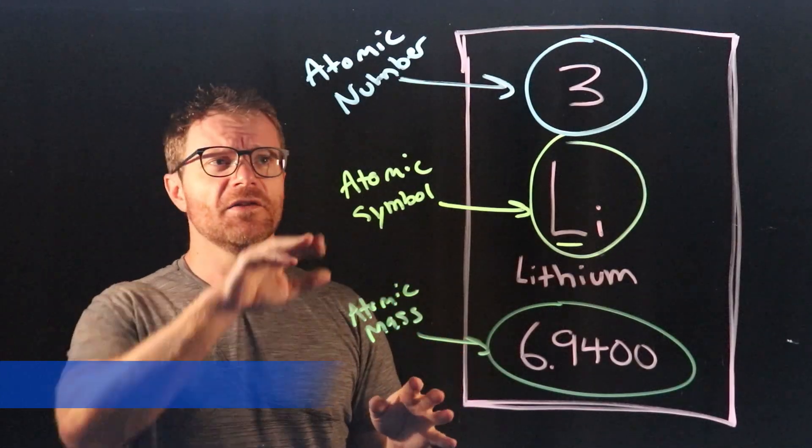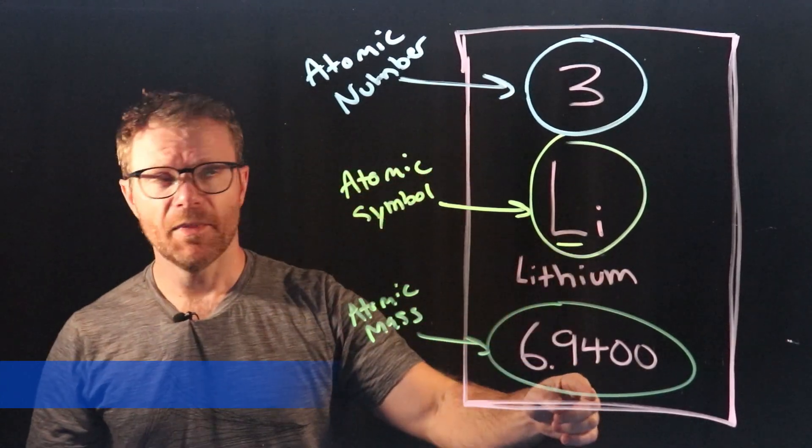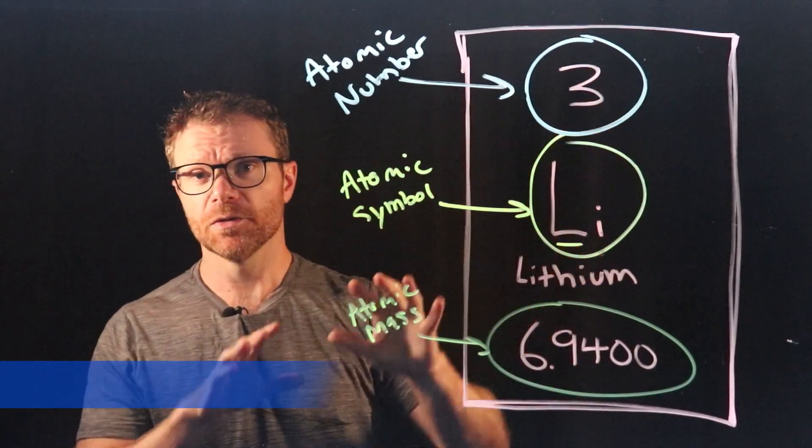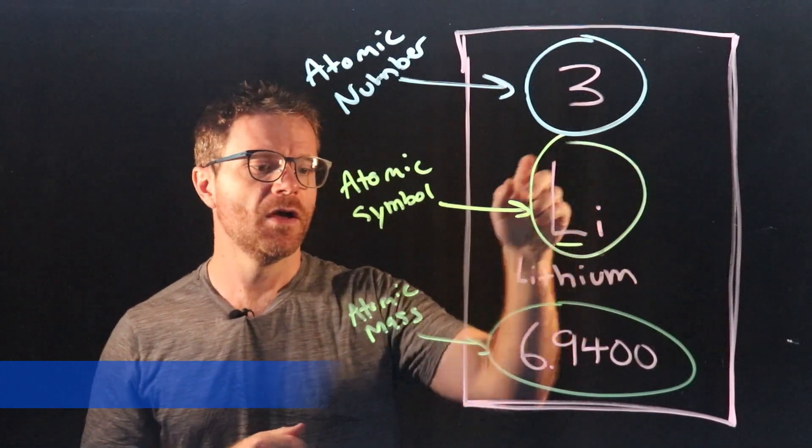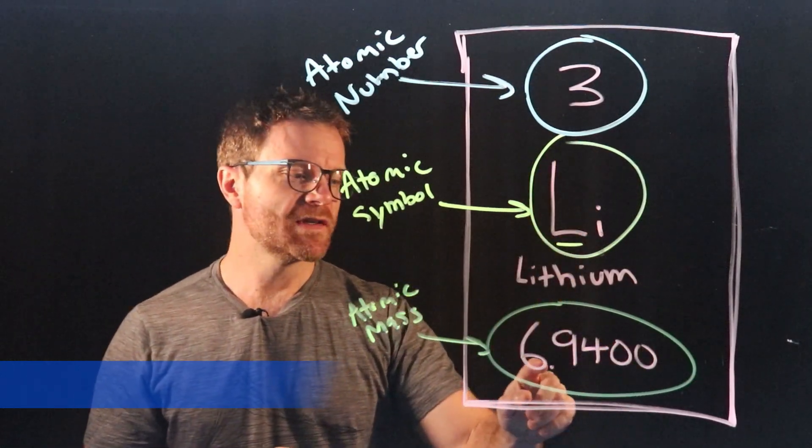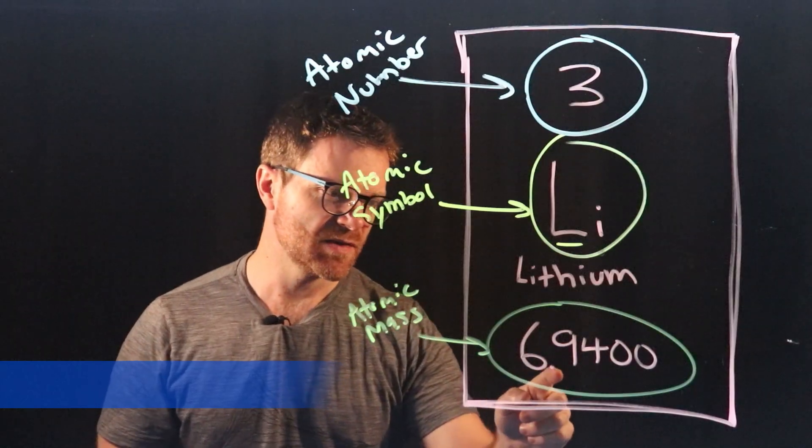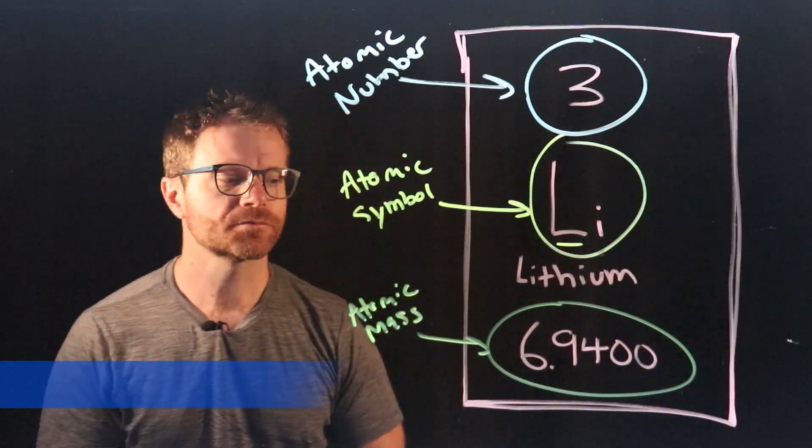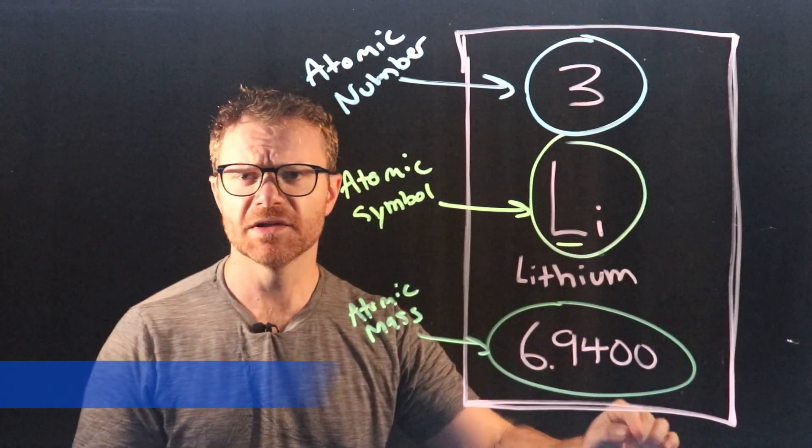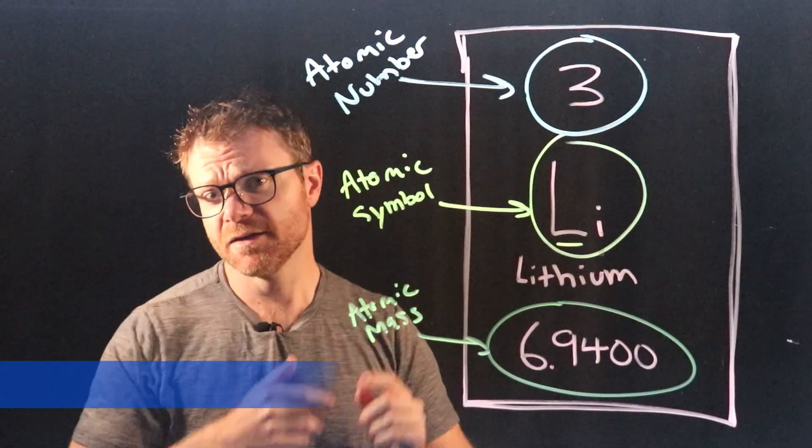The easiest way to tell the atomic number from the atomic mass is the atomic number is always a whole number: one, two, three, four, five. Atomic mass always has decimal places such as 6.9400. So if it has a bunch of decimal places, it's the atomic mass.